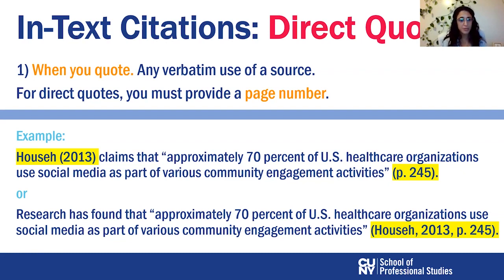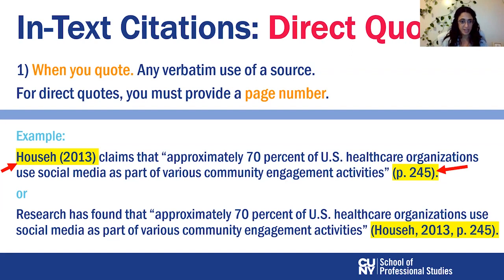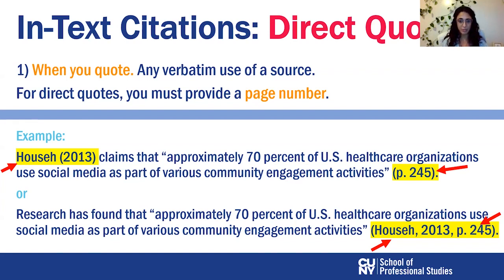In the first type, the author's name is in what we call the signal phrase — the phrase that tells the reader a quotation is coming. Here the signal phrase is 'Hause claims that,' and I enclose the quote with the page number at the end, separating the author's name from the page number. In the second example, called parenthetical citation, I put all the information — name, year, and page — separated by commas inside parentheses.